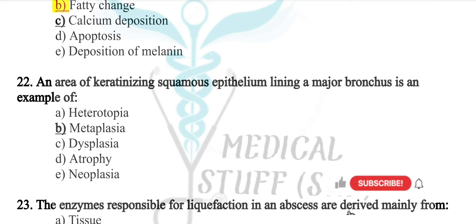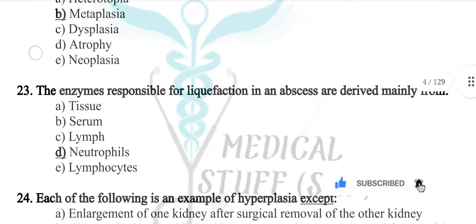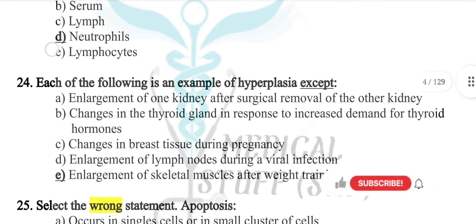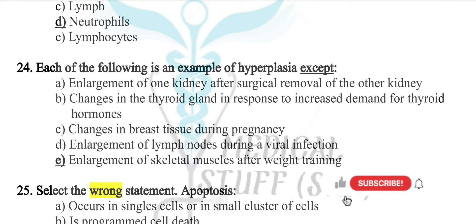An area of keratinizing squamous epithelial lining is a major example of metaplasia — this MCQ appeared in the last prof exam. The enzymes responsible for liquefaction in an abscess are derived mainly from neutrophils. Each of the following is an example of hyperplasia except enlargement of skeletal muscles from weight training.